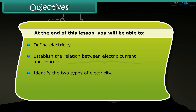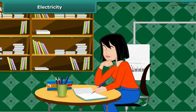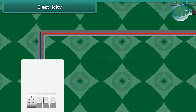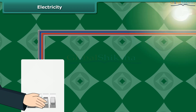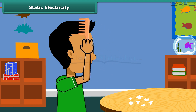You will also identify the two types of electricity and define conductors and insulators. How do you study in the late evening? Of course, you light up your room using an electric bulb. Have you ever wondered what causes the bulb or tube to light up? They need electricity. Electricity passes through the wires and reaches the filament of the bulb, heating it up to glow.